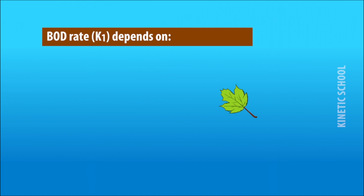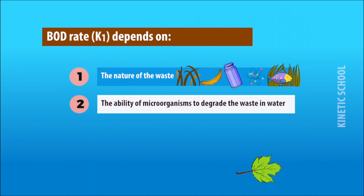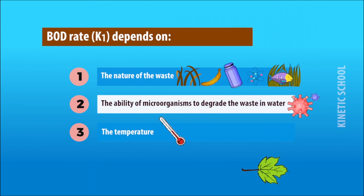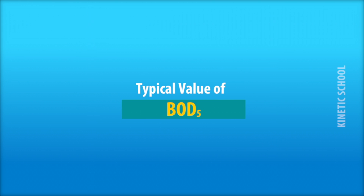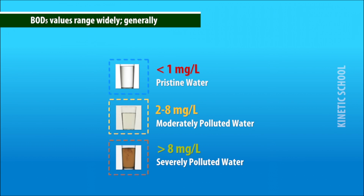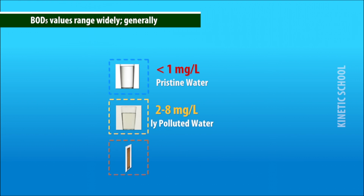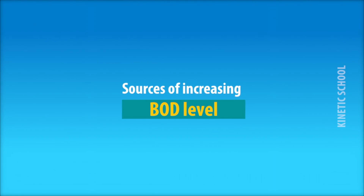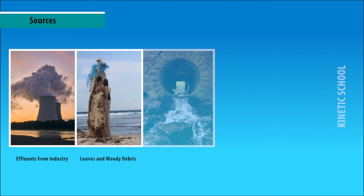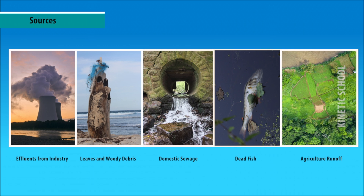The BOD rate constant k₁ depends on the nature of the waste, the ability of microorganisms to degrade the waste in water, and temperature. Typical BOD values: pristine water has BOD less than 1 mg/L; moderately polluted water is 2 to 8 mg/L; above 8 mg/L is considered severely polluted water. Sources of increasing BOD levels include industrial influence, leaves and woody debris, domestic sewage, dead fish, and agricultural runoff.